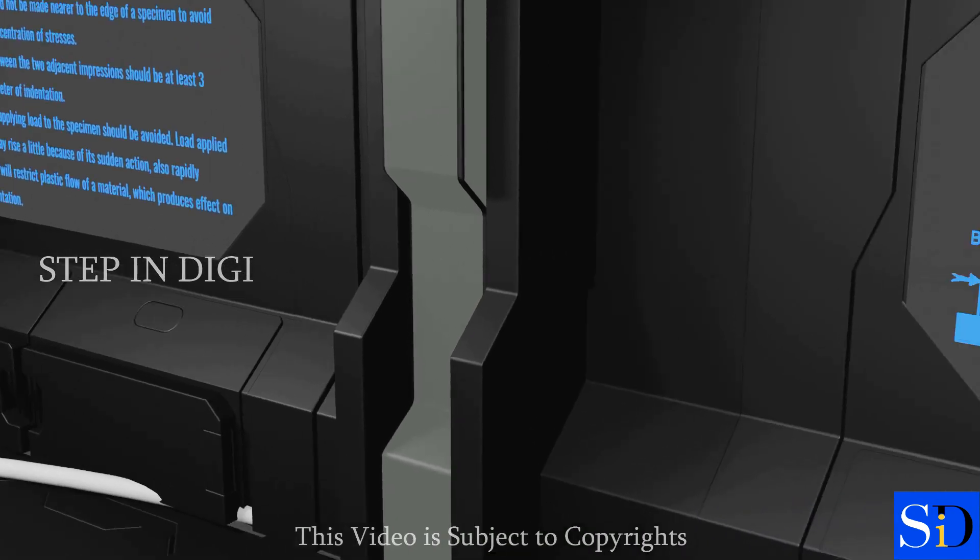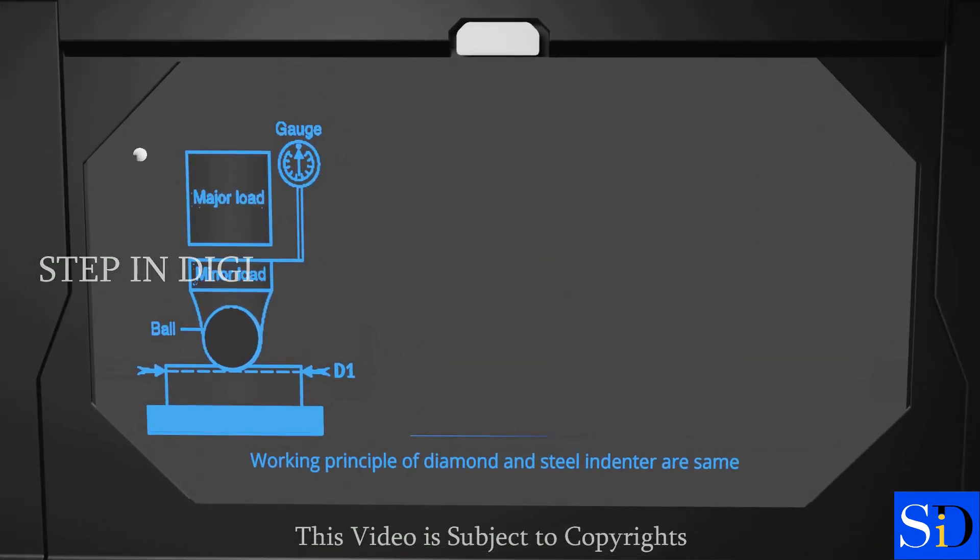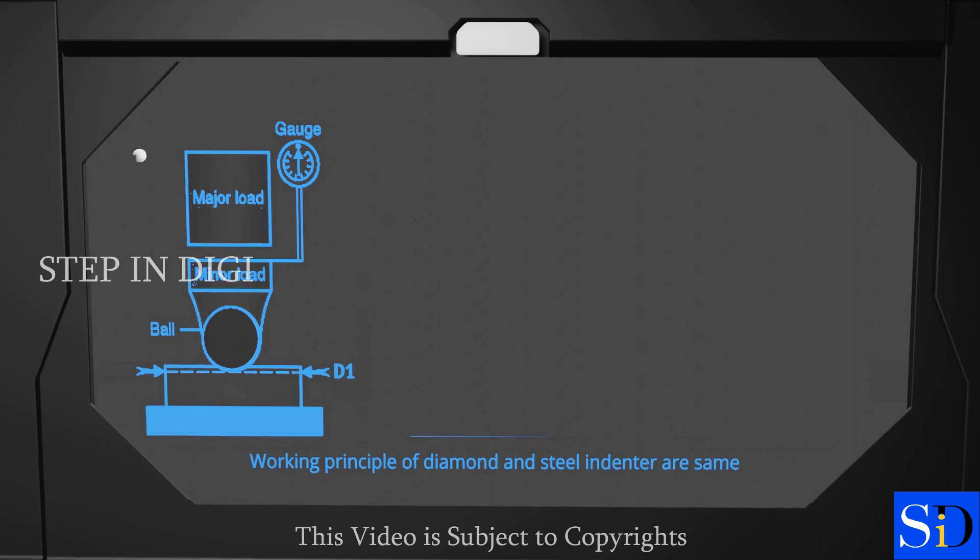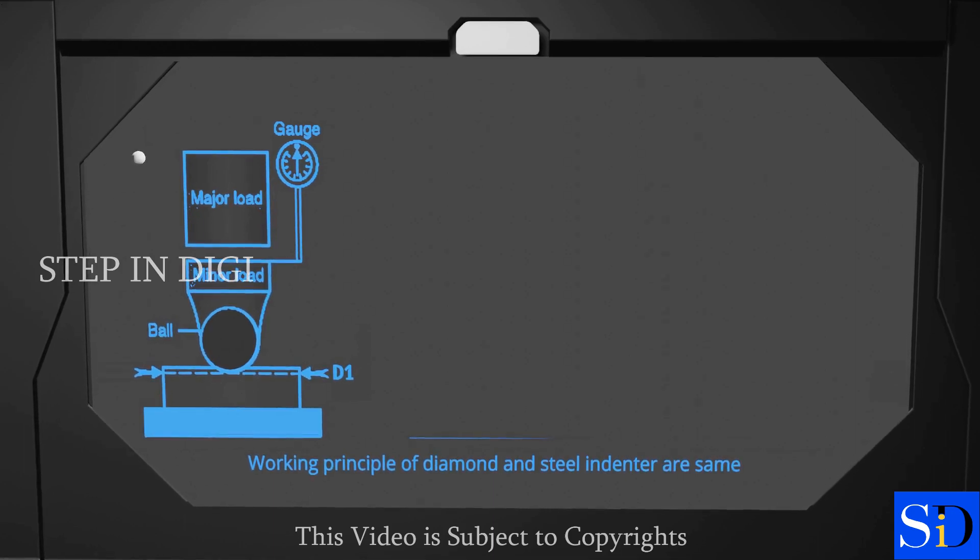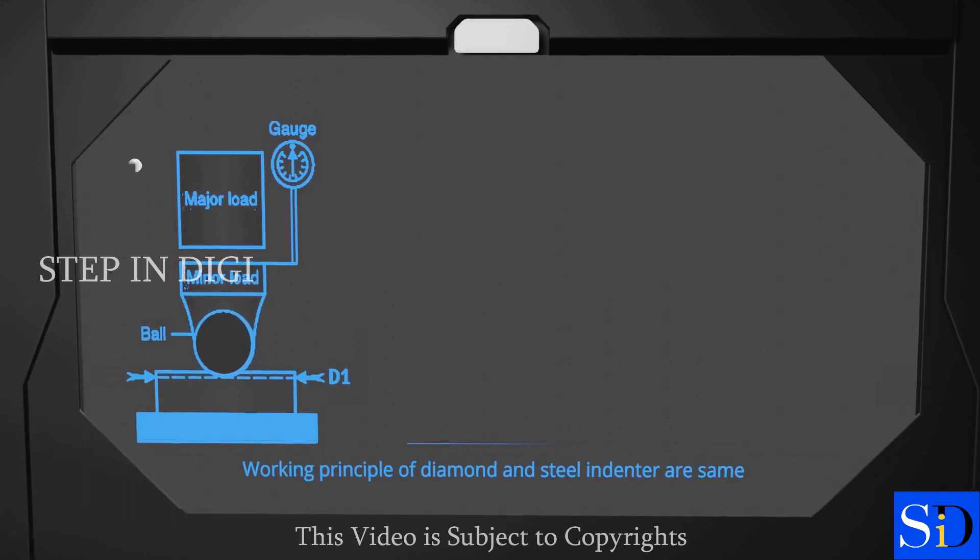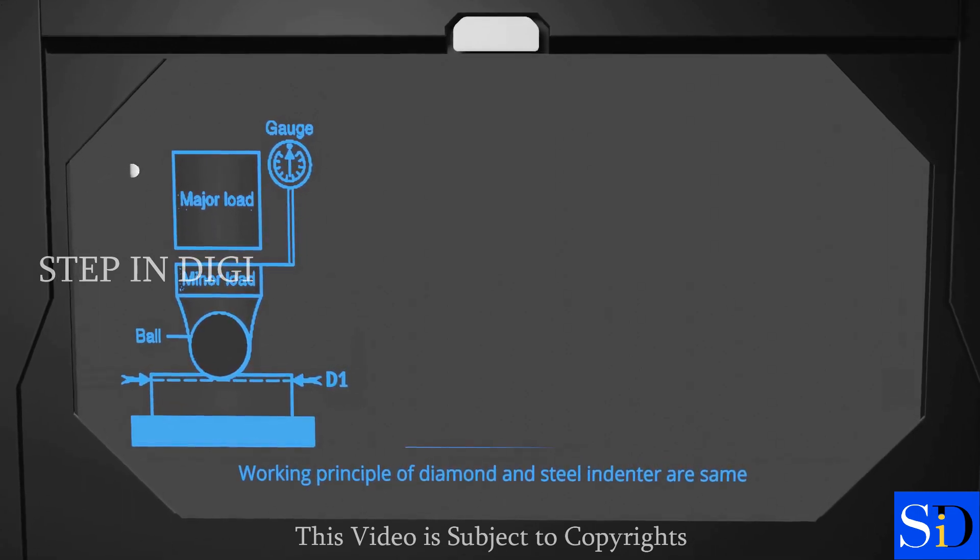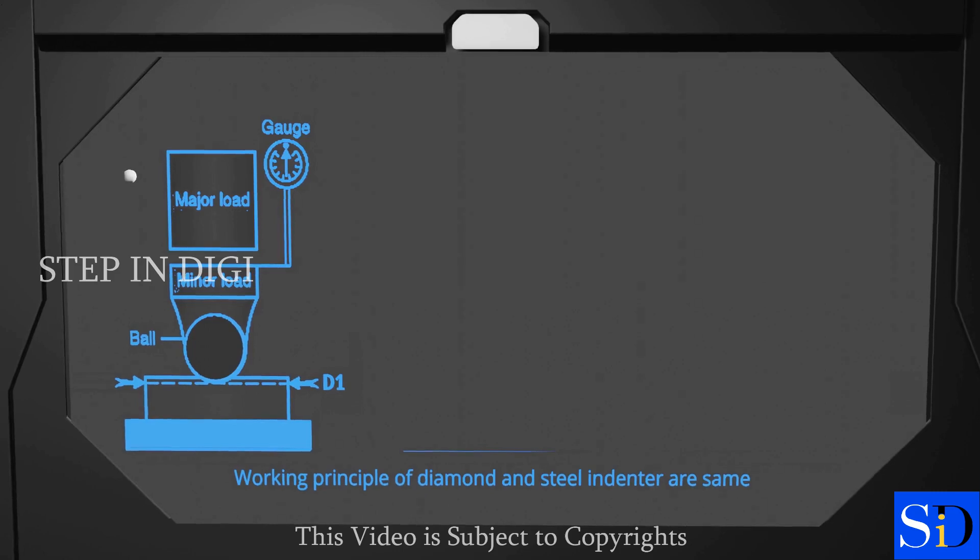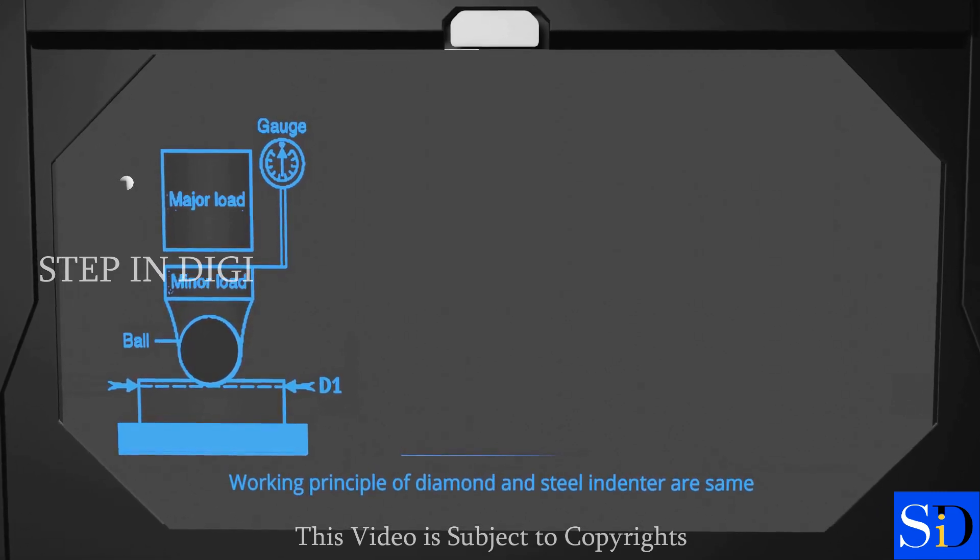The indenter is forced into the surface of a test piece in two steps. Initially a minor load of 10 kg is applied to a penetrator causing an indentation T1 in the test specimen. Application of minor load eliminates backlash in load train and causes indenter to break through surface roughness, contributing to accuracy of test.